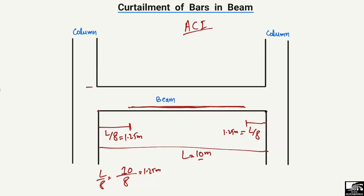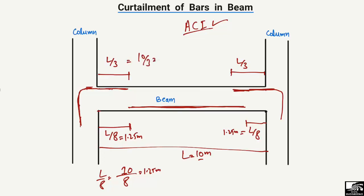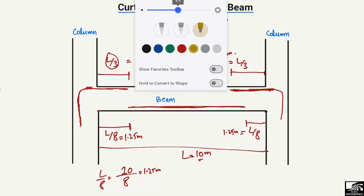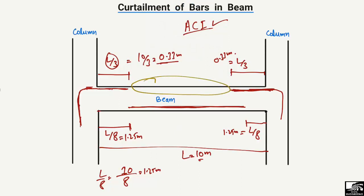Similarly, we have negative bending moment at the extreme edges, so we provide reinforcement at the top of the beam at those edges. According to ACI, these top bars should only be extended to L/3 from each support. With L equal to 10 meters, L/3 equals approximately 3.33 meters, so the top bars are extended only 3.33 meters from each end.